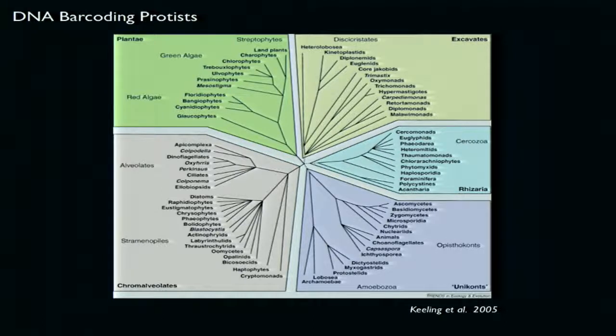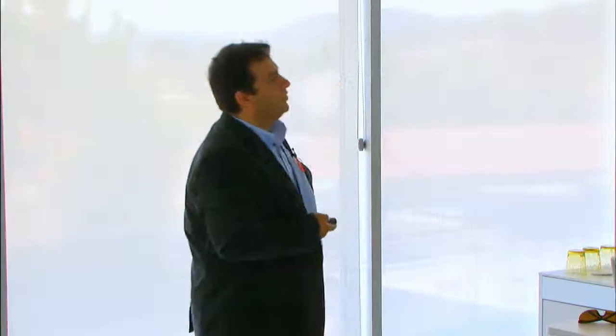Protists are everything that is not a plant, fungi, or animal — and evolutionarily speaking, they are extraordinarily diverse. How can you converge on just a small piece that can resolve all of them? It's impossible. In protists, we have to settle on probably a marker to get you somewhere in this diverse set of groups, but then you need supplementary markers, and sometimes a genome scan to get them resolved.